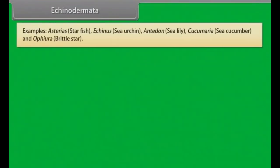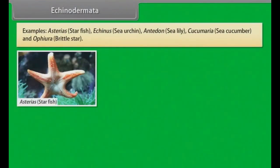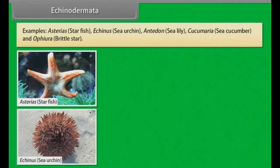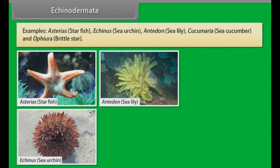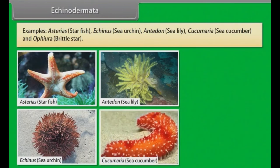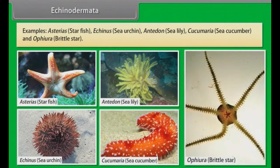Examples: Asterias, that is starfish; Echinus, that is sea urchin; Antedon, sea lily; Cucumaria, sea cucumber; and Ophiura, brittle star.